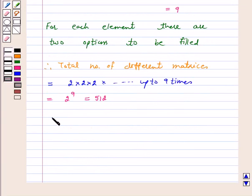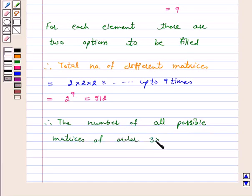Therefore, the number of all possible matrices of order 3 by 3 with each entry 0 or 1 is 512.